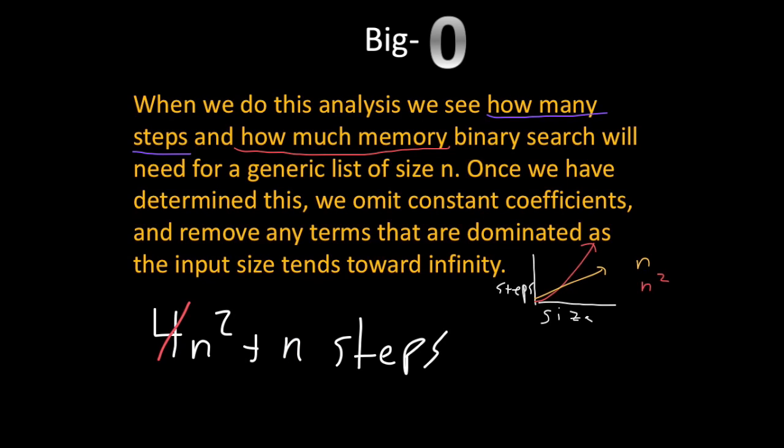The graph of n squared is going to look like this where the graph of n is just going to look like this. So this is a much faster growing slope. In fact, this slope doesn't grow at all. Anyway, so now we can remove the linear term. All that's left is n squared. So the algorithm runs at O of n squared.